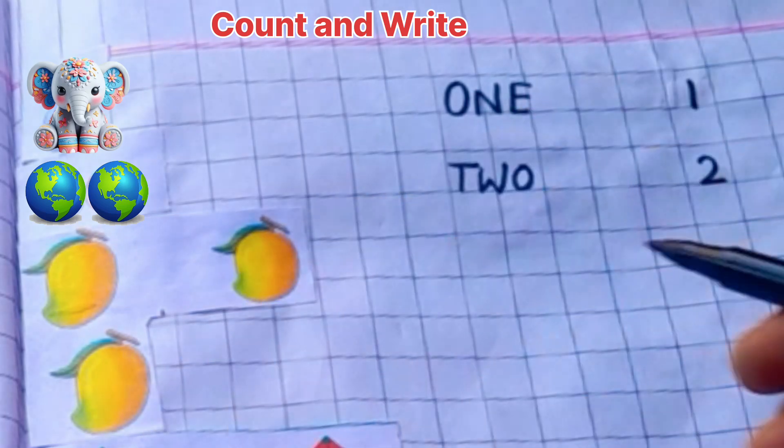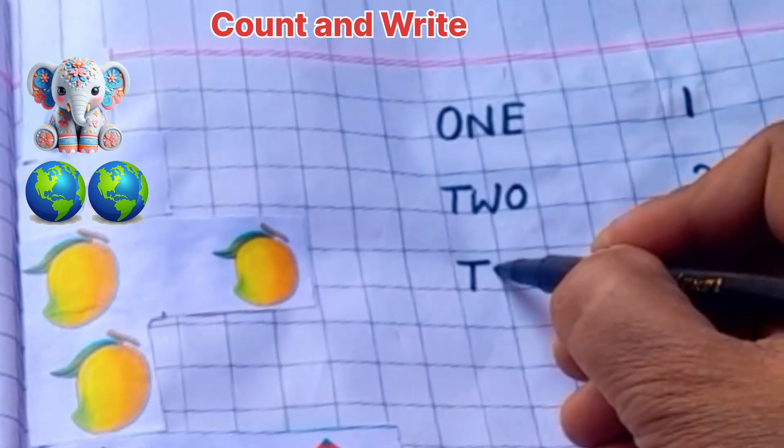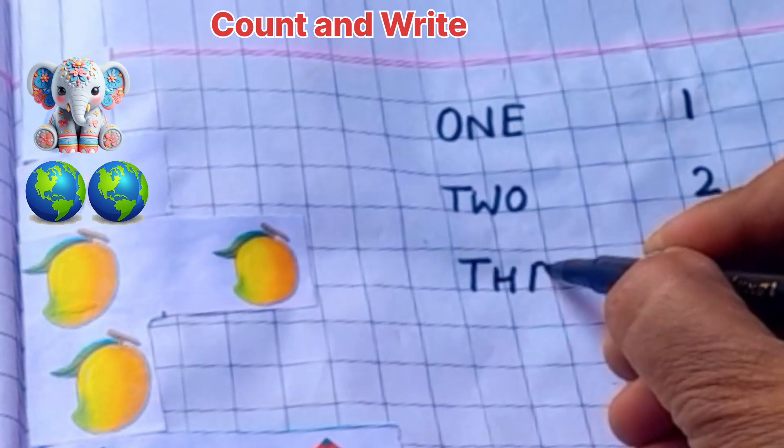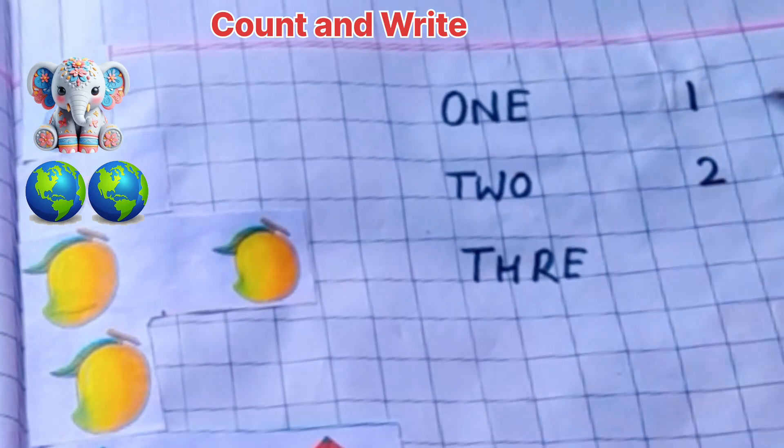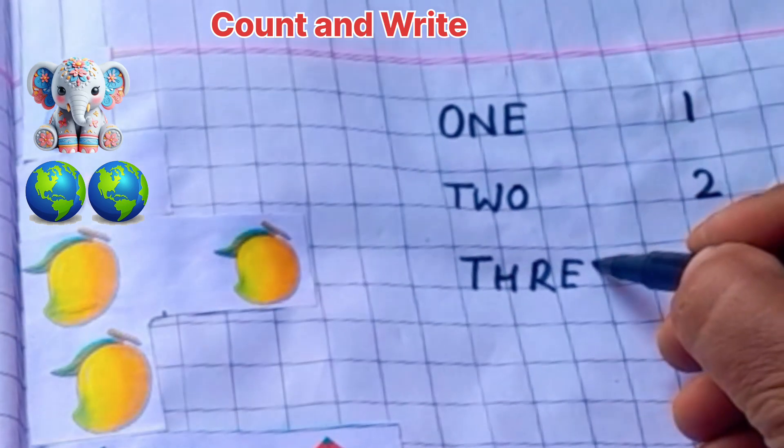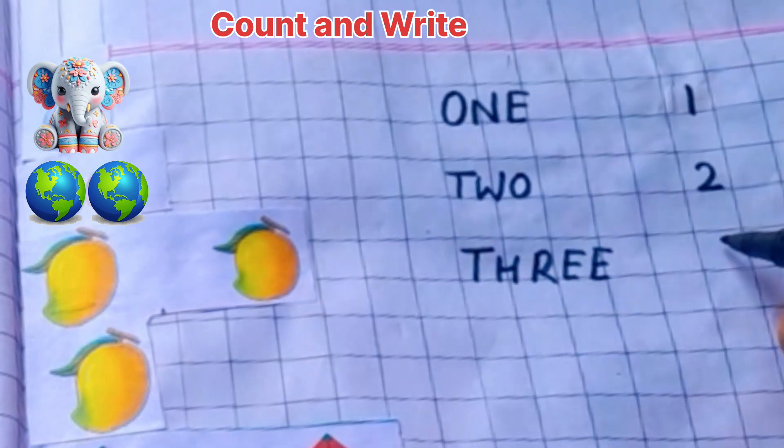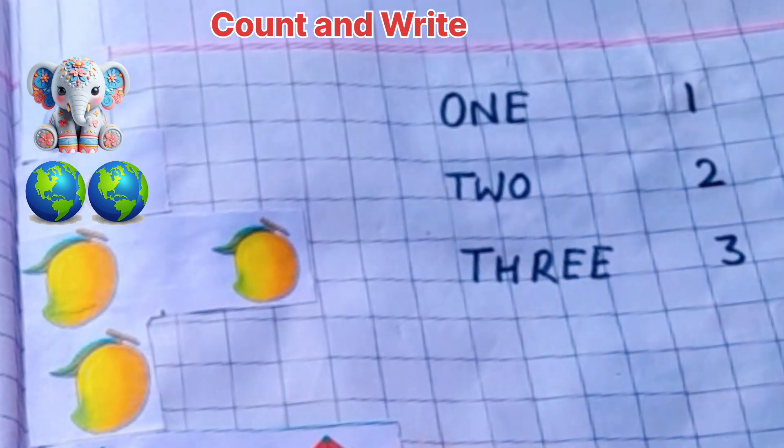One, two, three. T, H, R, E, E. Three. Three mangoes. Very good kids.